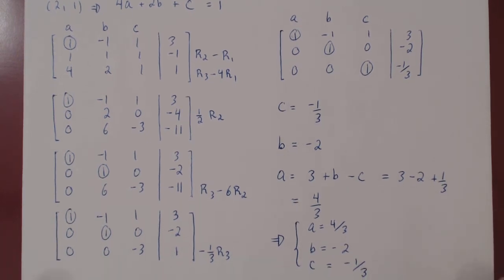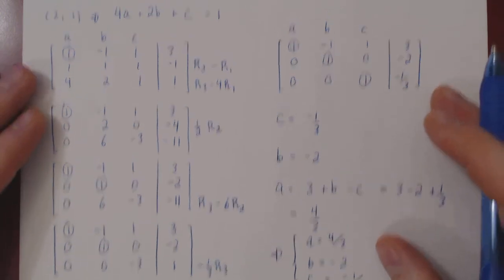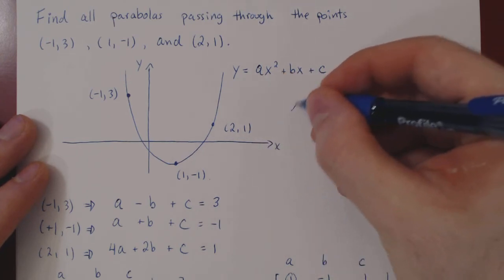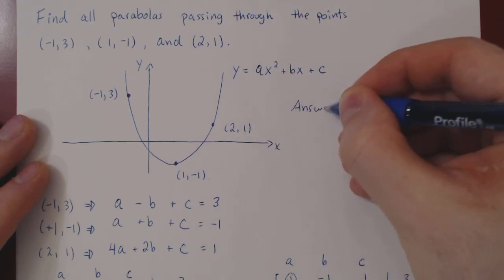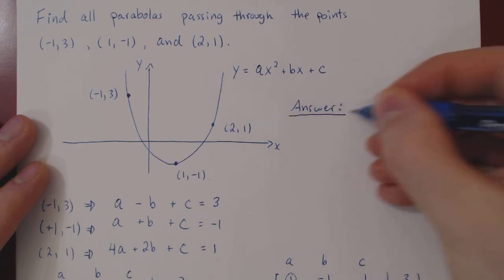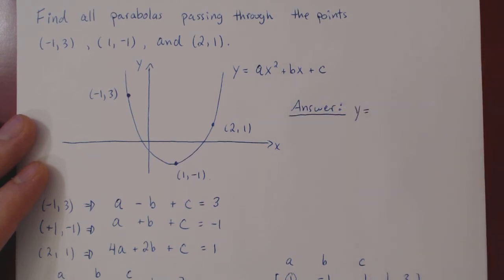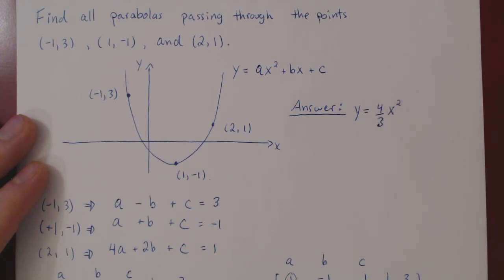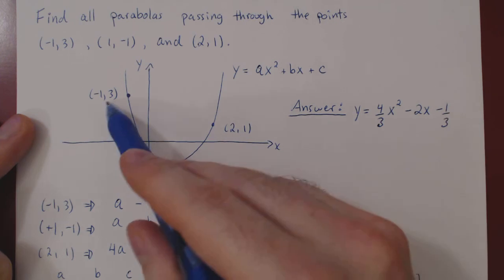But now we have to go back and answer the actual question which was finding all parabolas passing through the given three points. Well there is a unique one so we can replace and give our final answer. And the unique parabola will be y equals a, which was four-thirds x squared, plus bx, but b was negative two, plus c which was negative one-third. And there you have it. This is the equation of the unique parabola that passes through these three points.